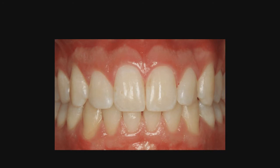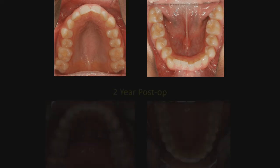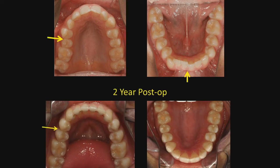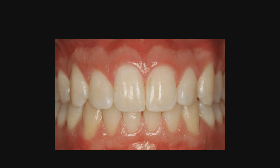The post-op view after orthodontics is complete — and I think you would all agree that the likelihood of recession with all that bone in the lower anterior would be remote. Therefore, in the future, we may consider localized PAOO when we know the bone type is inadequate. In the pre-op view, the teeth in the bicuspid or premolar area were moved facial, and doing localized PAOO would create a thick biotype and a nice thick bony biotype as well — the same is true in the lower anterior area.